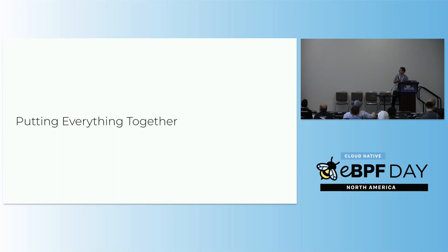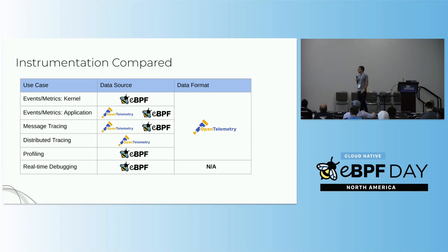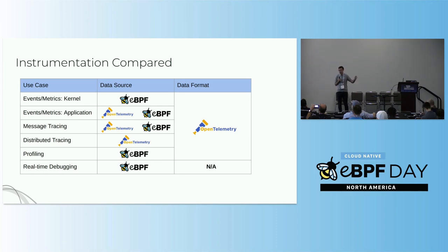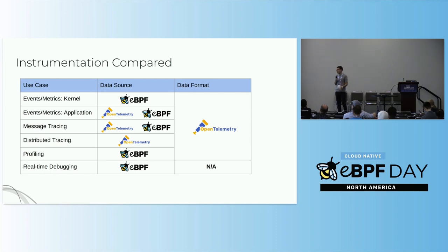Here's a summary table of everything I talked about and where you'd want to use OpenTelemetry or eBPF. Anything in the kernel: use eBPF. In the application layer, it depends on your use case - you can use either. The more specific you want, go OpenTelemetry; the broader you want, go eBPF. For message tracing and service maps, you can use both. Distributed tracing is more OpenTelemetry's domain today. For profiling, eBPF is a great data source, but for the data format and standard for exchanging telemetry information, let's leave that to OpenTelemetry - there's no reason to reinvent that.